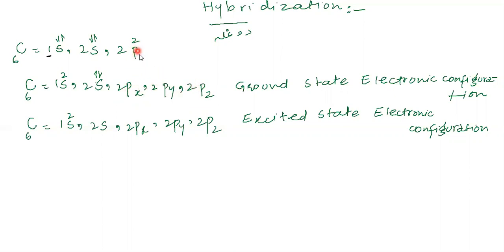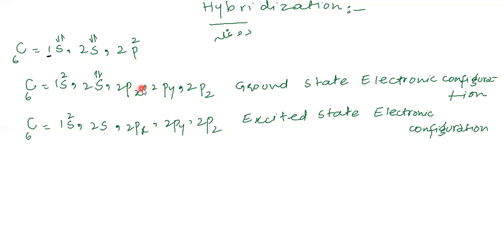The P sub-shell has 3 orbitals: Px, Py, Pz. Because the P sub-shell belongs to the second shell, these are 2Px, 2Py, and 2Pz. Their energies are the same — they are degenerate. So the remaining 2 electrons will go into 2Px and 2Py separately, because their energy is the same.